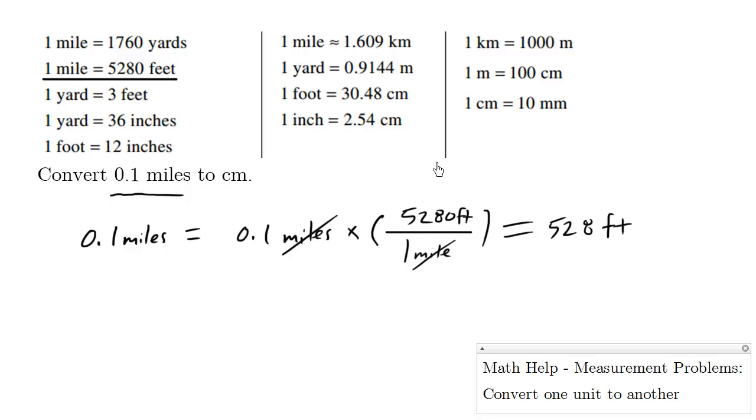Now we can convert feet to centimeters. So what we have here is 1 foot equals 30.48 centimeters approximately. And so we have 528 feet again equals 528 feet times 1. But we're going to replace the number 1 with a fraction.